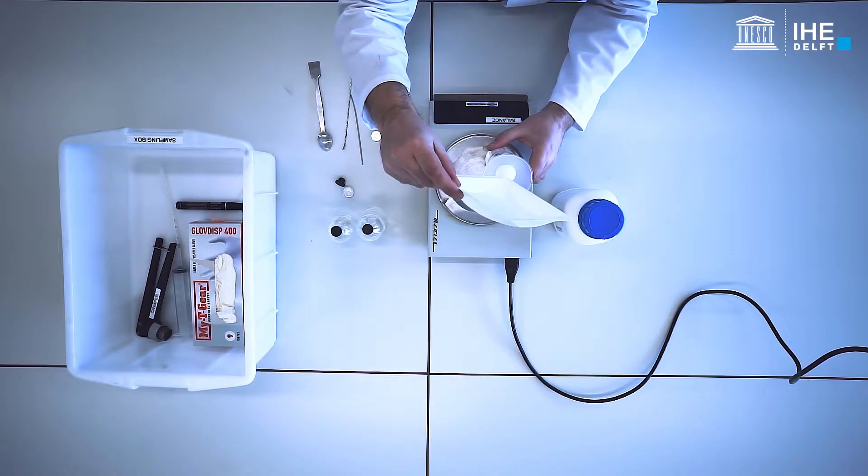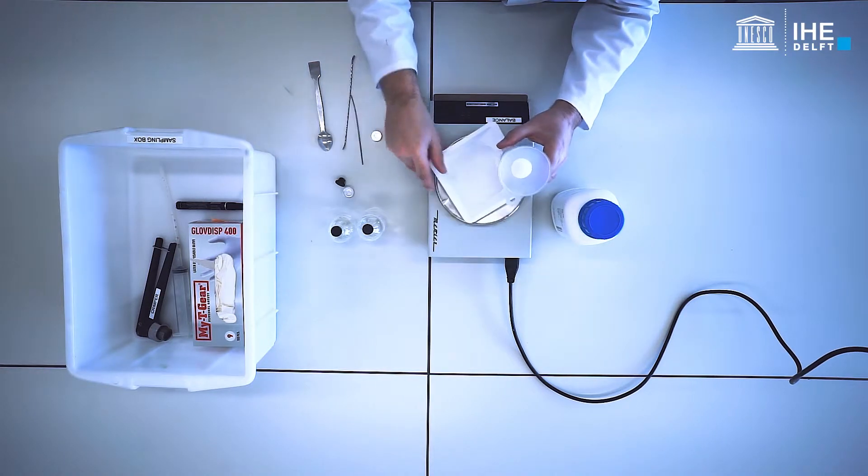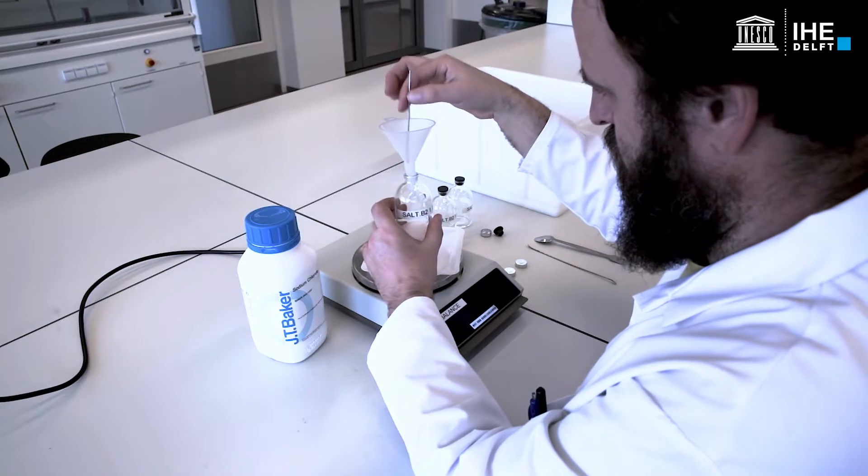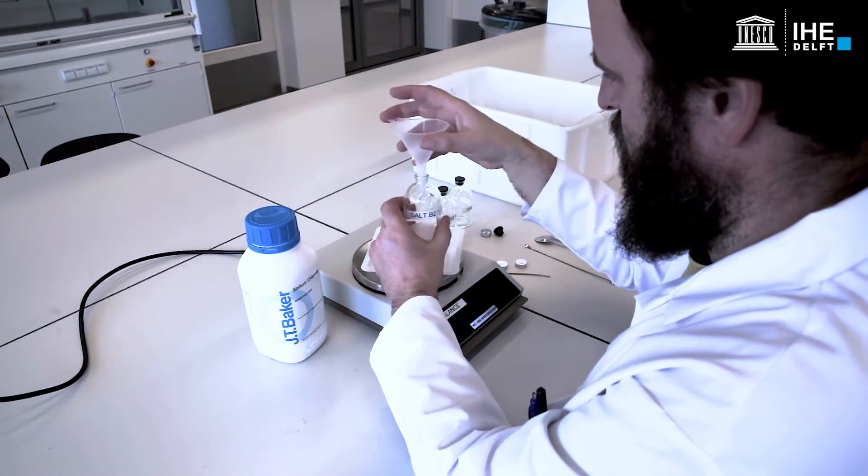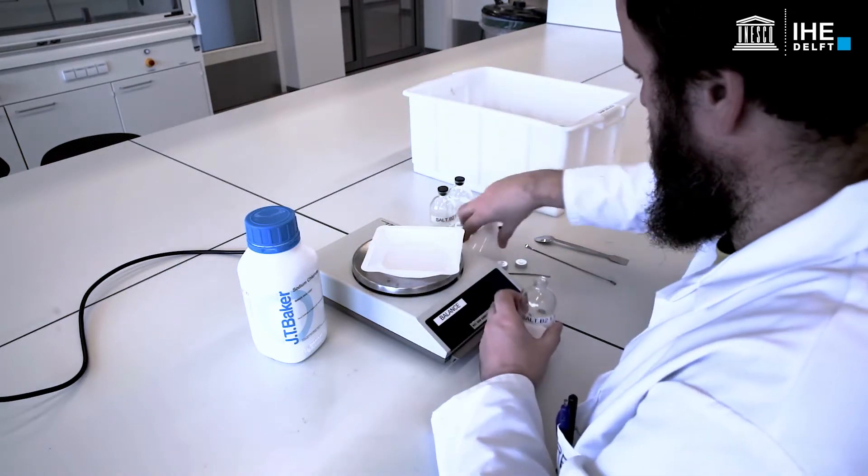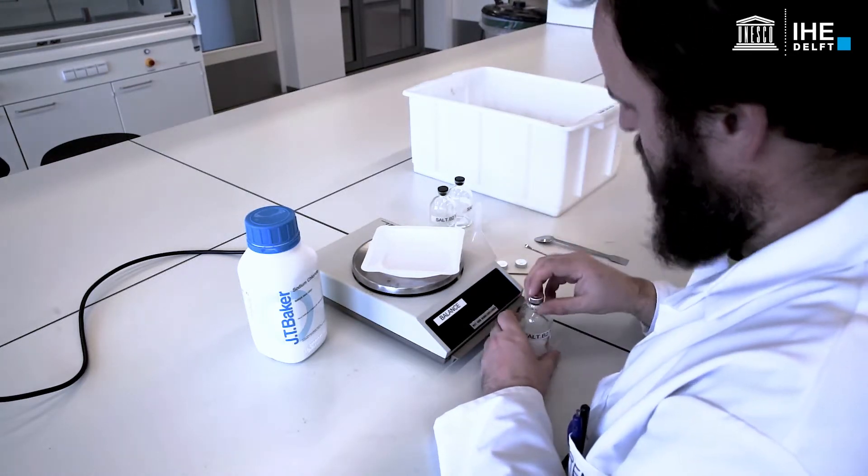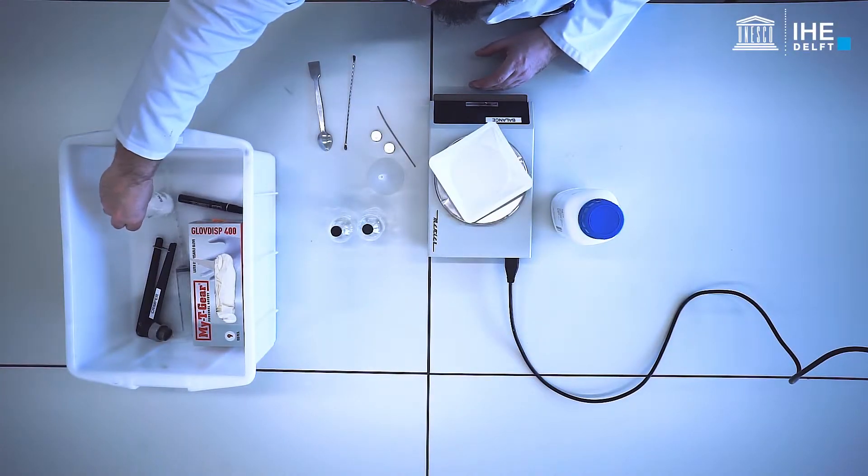Prepare the required number of serum bottles depending on the number of samples to collect and bearing in mind that the analyses should be carried out in triplicate. Once the salt has been poured in, put the rubber stopper and the lid on the bottles without closing them and leave them ready with the rest of the materials for the in-situ collection of samples.